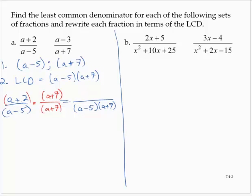We can leave it as (a + 2)(a + 7) over (a - 5)(a + 7). But later on, we'll want to multiply the numerator out, so rewrite the numerator as a² + 9a + 14, leaving the denominator in its factored form.